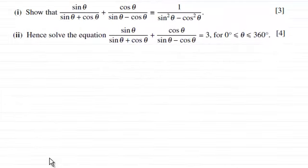Hi there. Now remember in the first part we were asked to show this identity here. And for the second part it says hence solve the equation sine theta divided by sine theta plus cosine theta plus cosine theta divided by sine theta minus cosine theta equals 3, for theta greater than or equal to zero degrees but less than or equal to 360 degrees for four marks. So if you'd like to have a go at this I'll just give you a moment to pause the video.